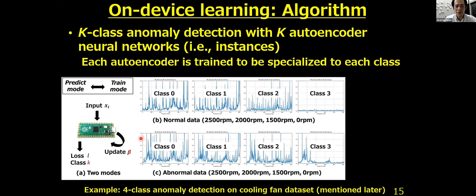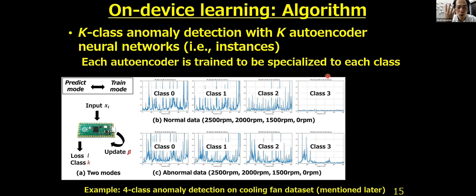The algorithm is an ensemble of autoencoder neural networks for anomaly detection. Each autoencoder instance can be trained to be specialized for each pattern. For example, consider rotating machines like fans rotating at four different speeds: 2,500 RPM, 2,000 RPM, 1,500 RPM, and 0 RPM. Each autoencoder is trained to be specialized for each speed, so we need four autoencoder neural networks. A four-class anomaly detection result on a cooling fan dataset will be shown later in this talk.